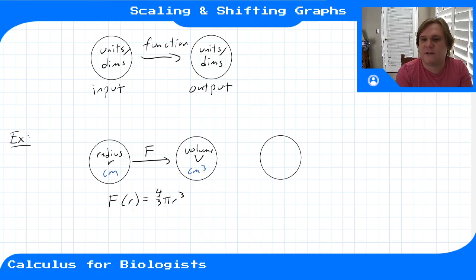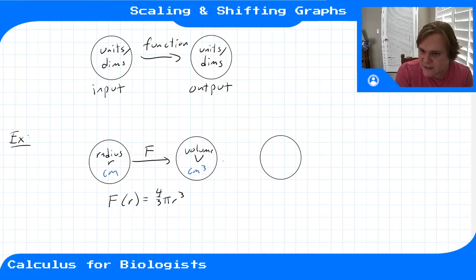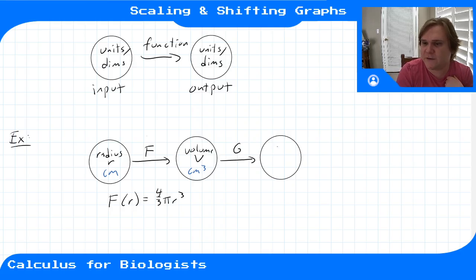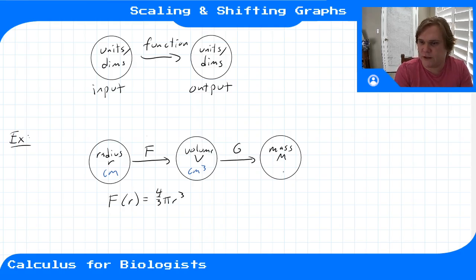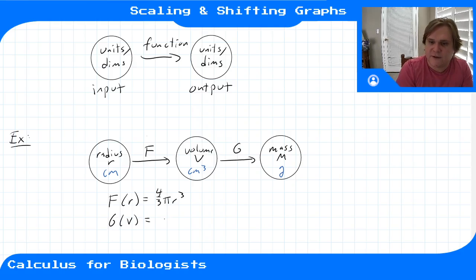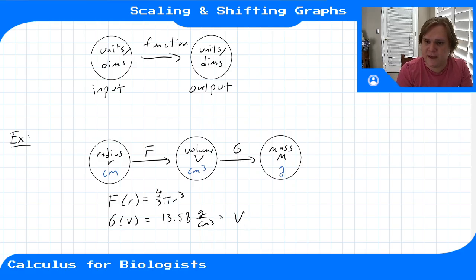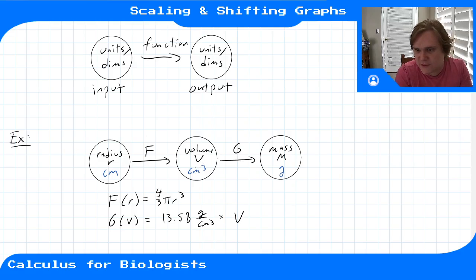We also multiplied by the density to find the mass of that sphere of water — another map from volume to mass. Mass m was measured in grams, and the function was g(v) = 13.58 grams per centimeter cubed times v. So each function takes an input with its associated units and maps it to an output with a different set of units.